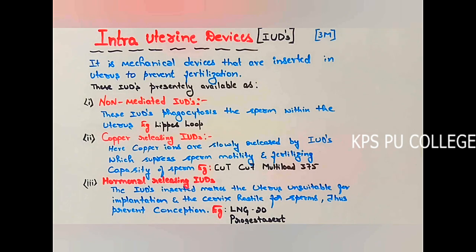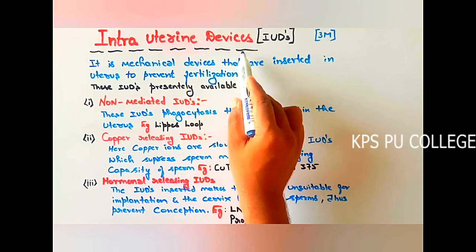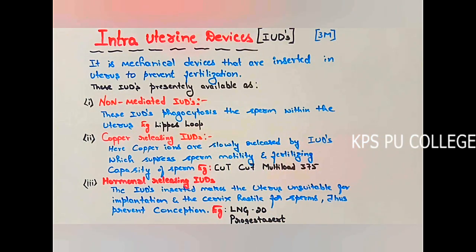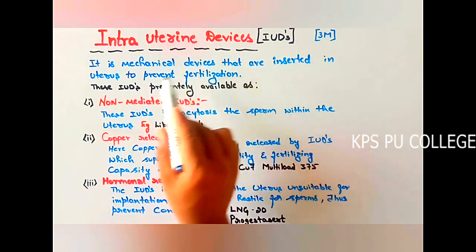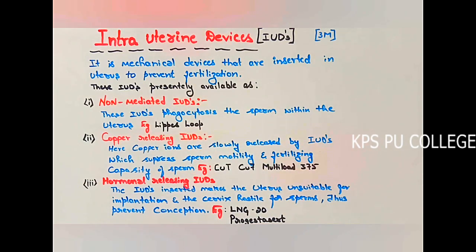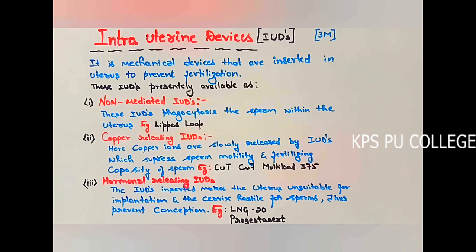Students, let us learn about a very important topic: intrauterine devices (IUDs). An intrauterine device is a mechanical device inserted in the uterus to prevent fertilization. IUDs are loop or ring-like structures made from plastic, copper, or stainless steel, and a particular expert or physician is required to insert them.